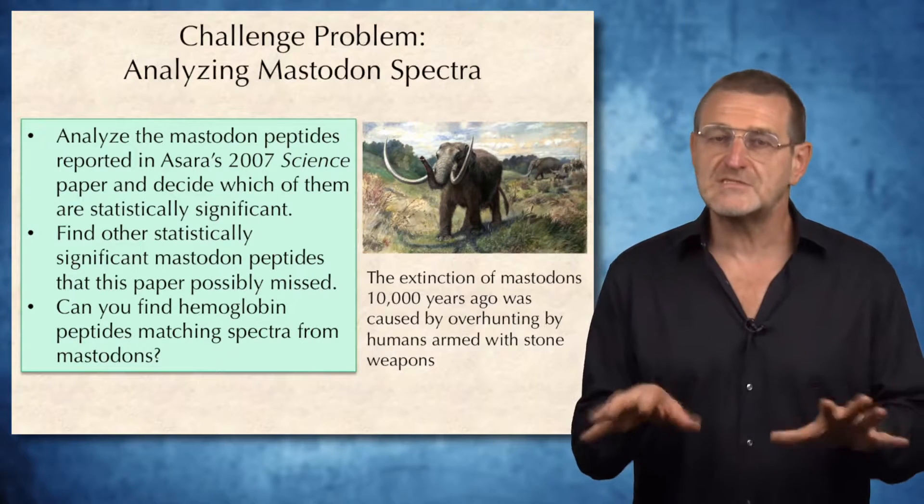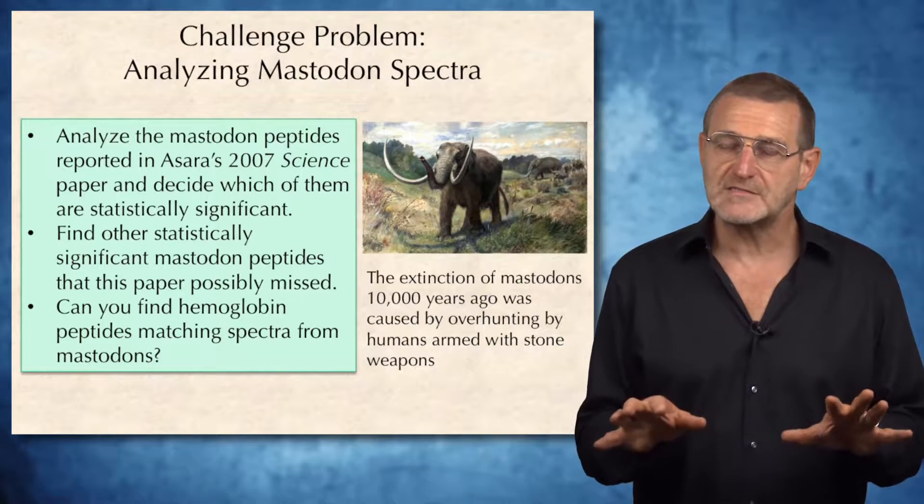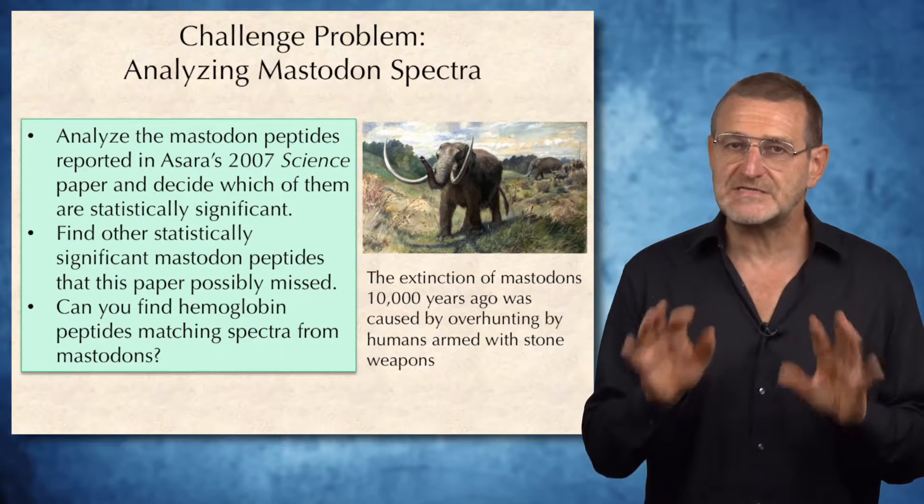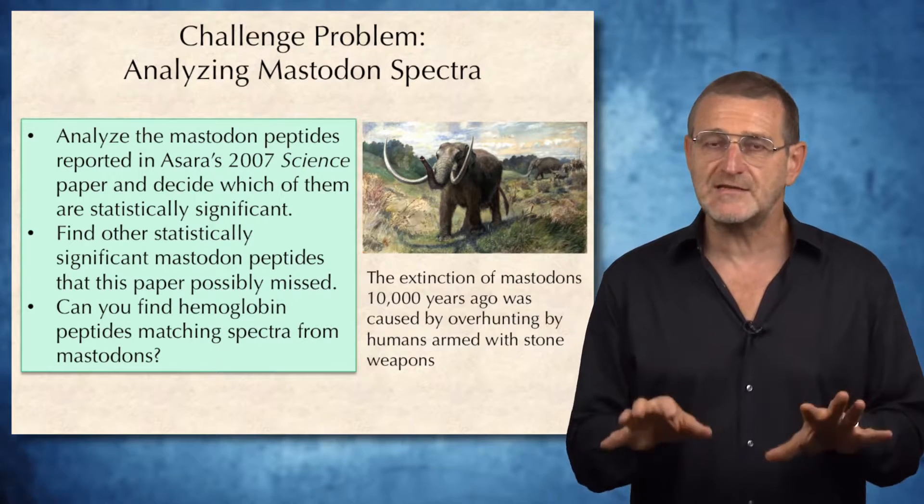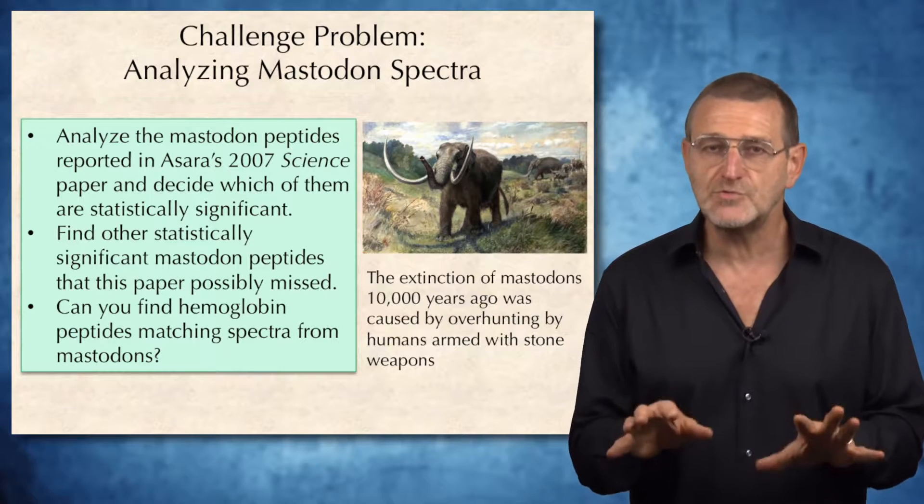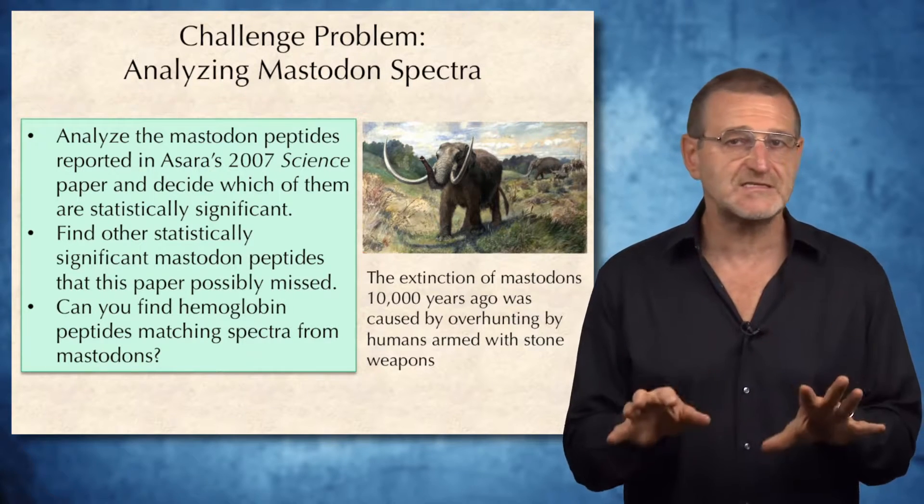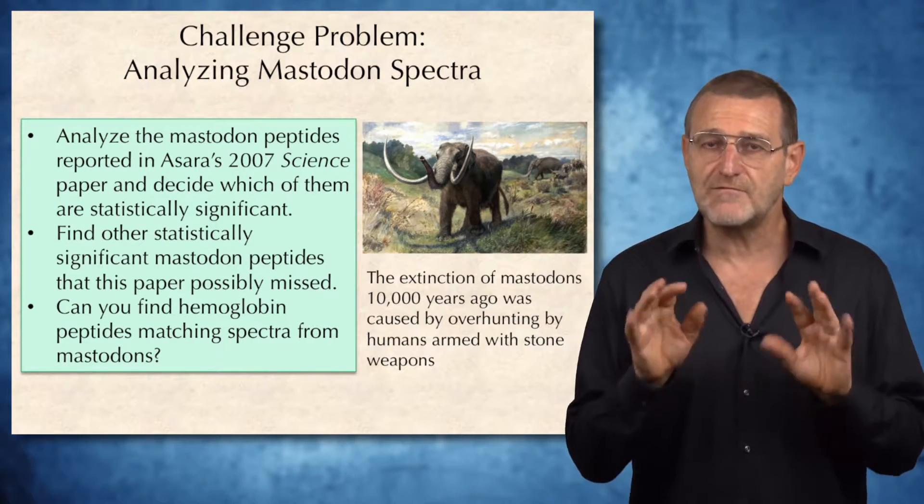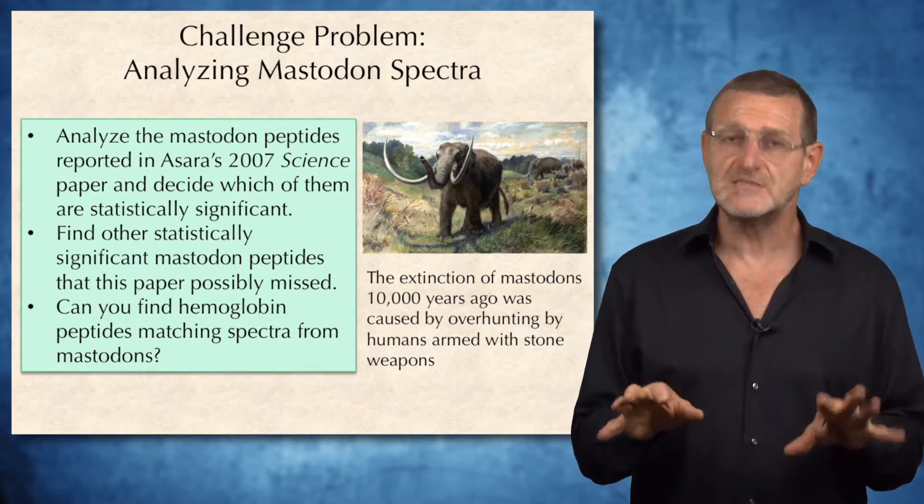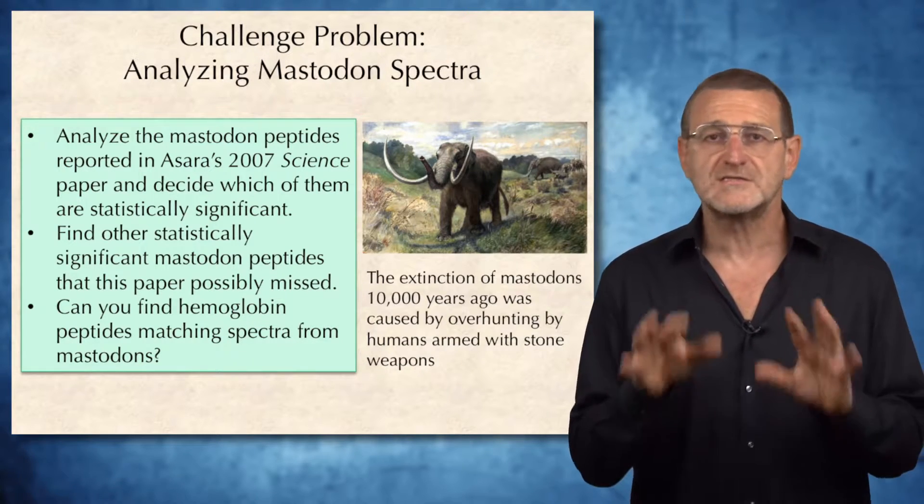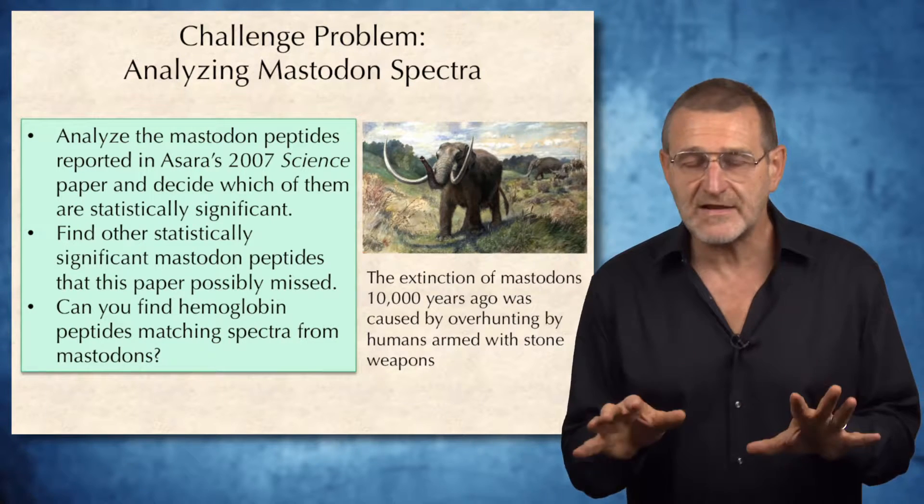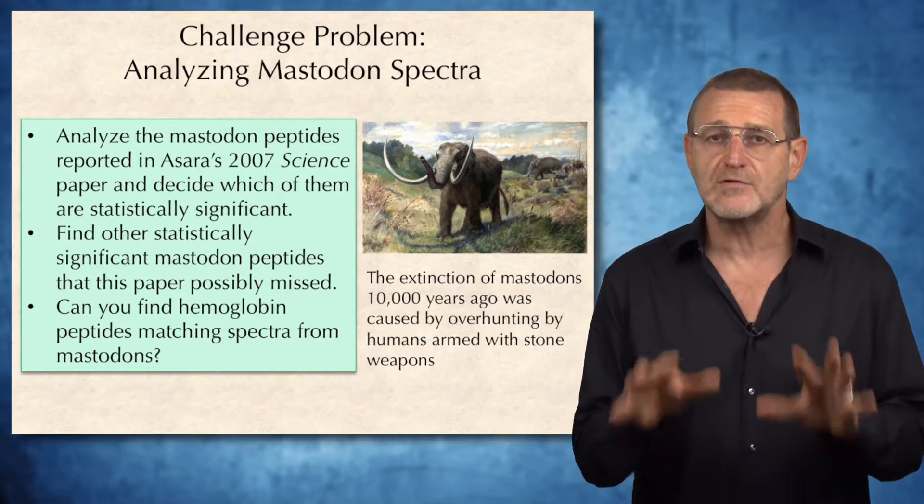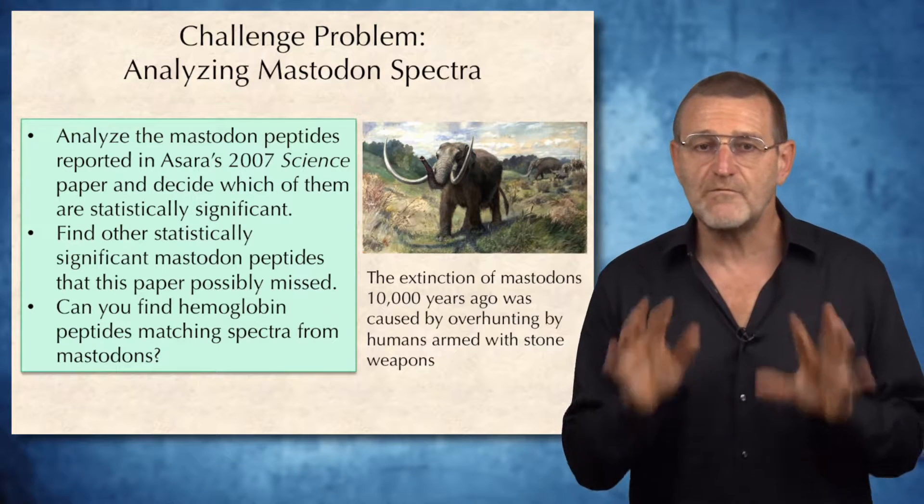After you learn about so many algorithms from computational proteomics, the time has come to address the challenge problem for this chapter. In the same paper where Zara presented T-rex peptide, they also presented mastodon peptides. And we want you to reanalyze them from the perspective of statistical significance. It actually has never been done. There is nothing surprising about finding collagen peptides in mastodons because mastodons roamed the earth just 10,000 years ago. They went extinct because of the climate change and overhunting by humans armed with stone weapons.